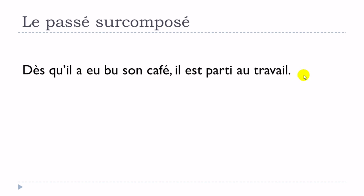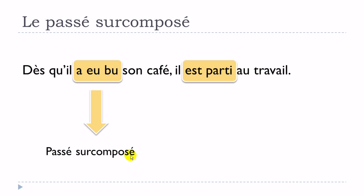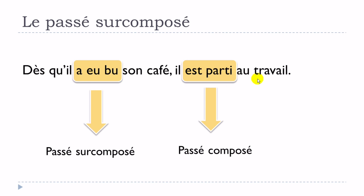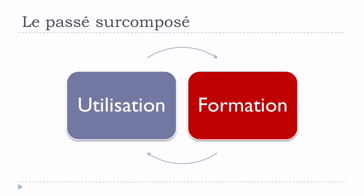Here is an example. The first thing to spot is 'a bu' and the second is 'est parti.' The form 'a bu' is the passé surcomposé, and 'est parti' is the passé composé. He had drunk his coffee — that happened first — then 'il est parti au travail.' So the first event is at the passé surcomposé and the second at the passé composé.